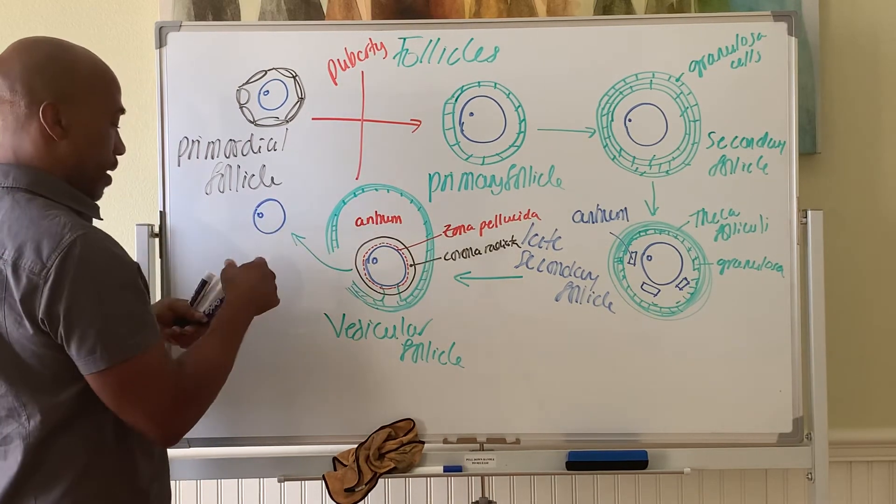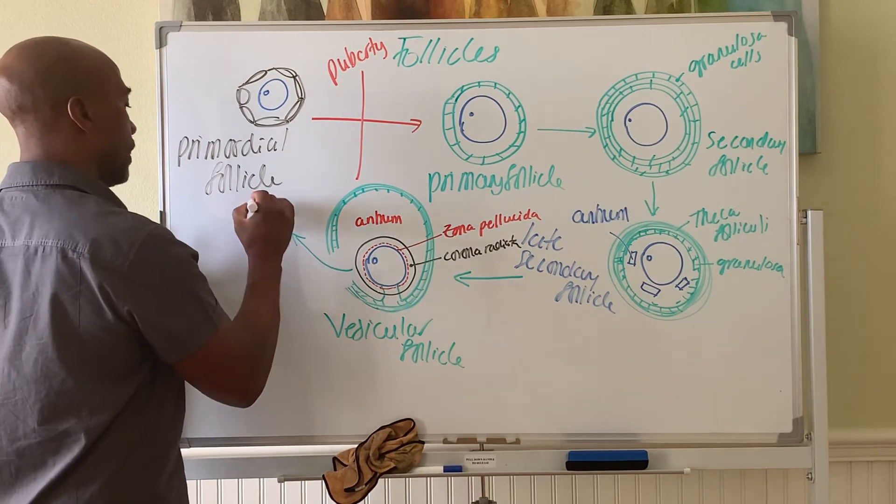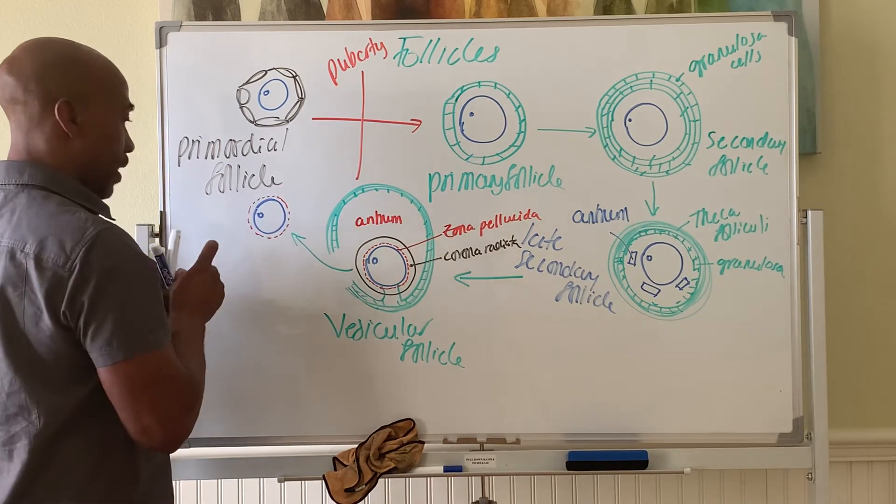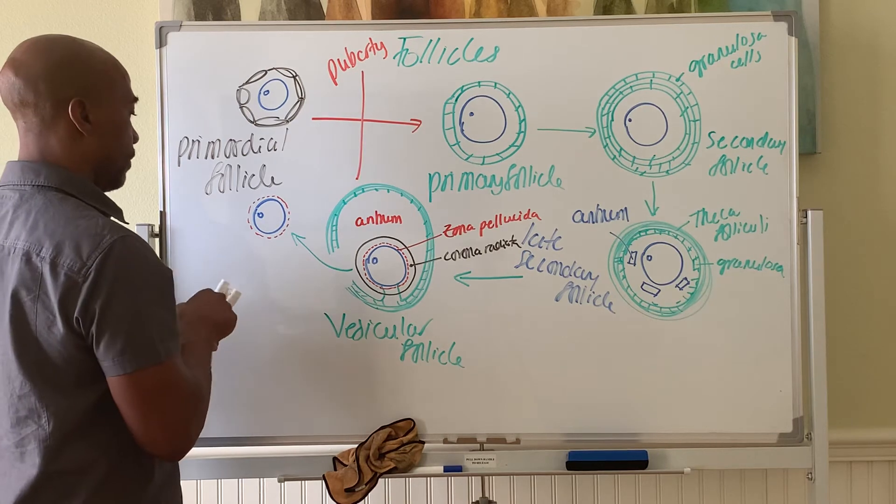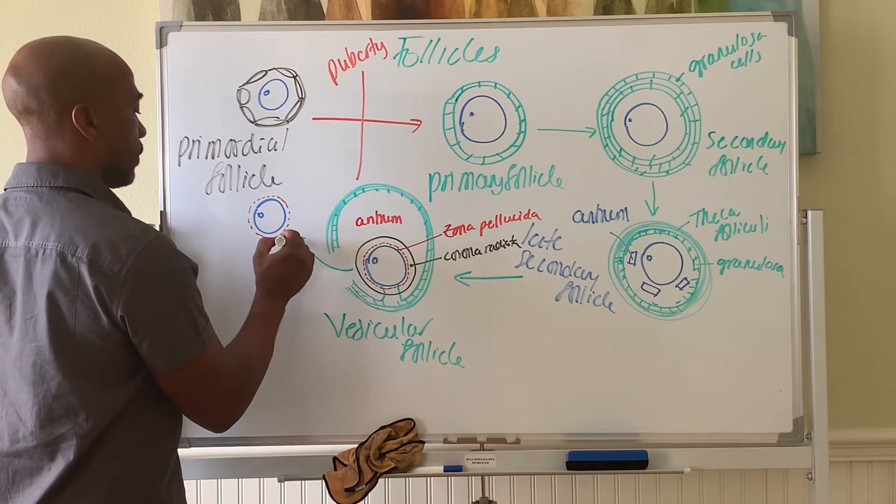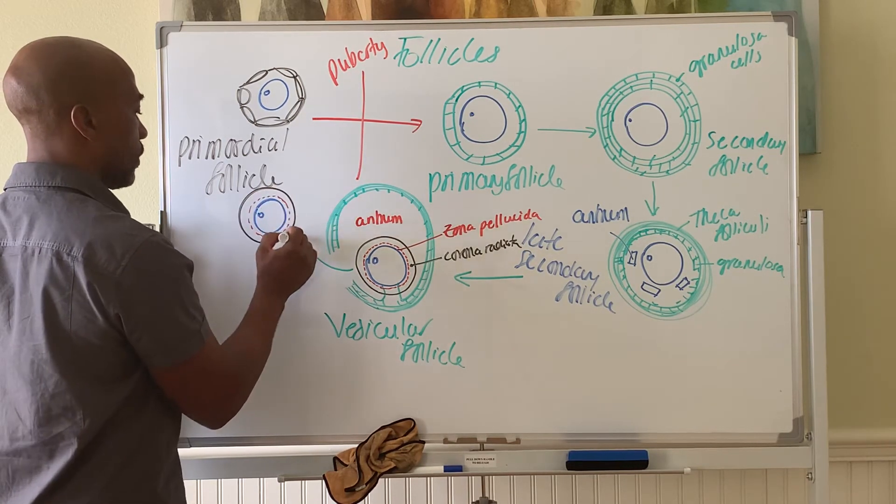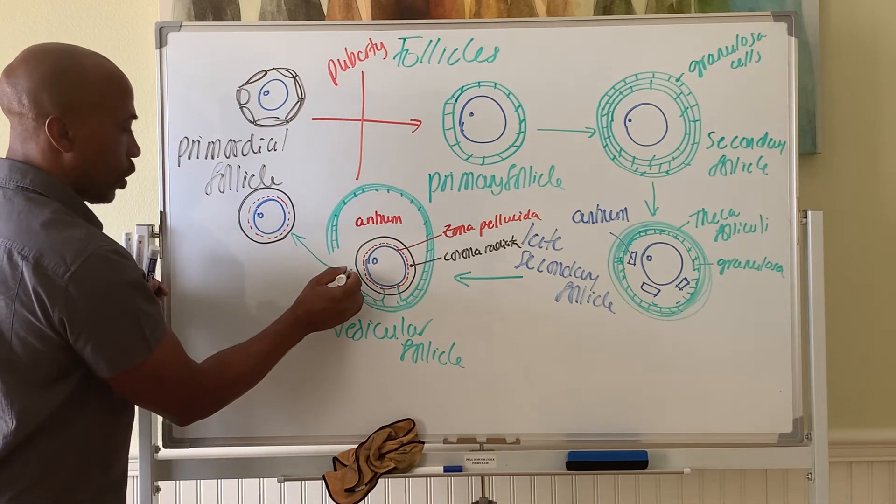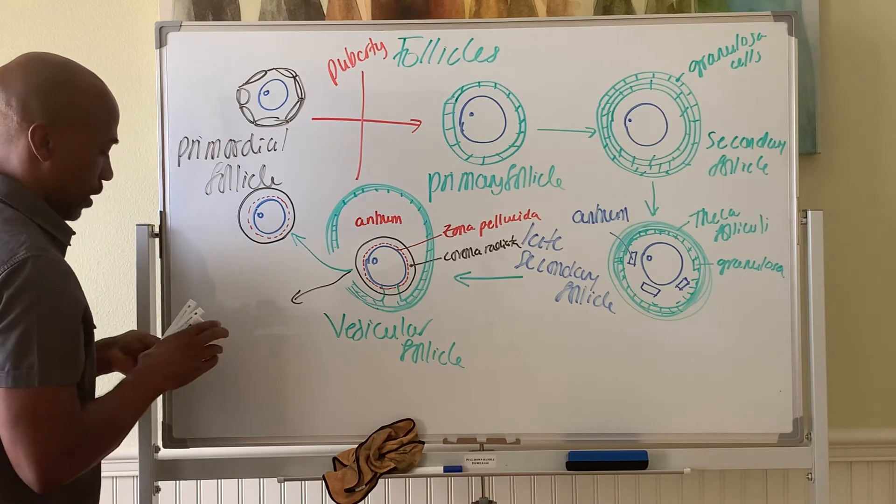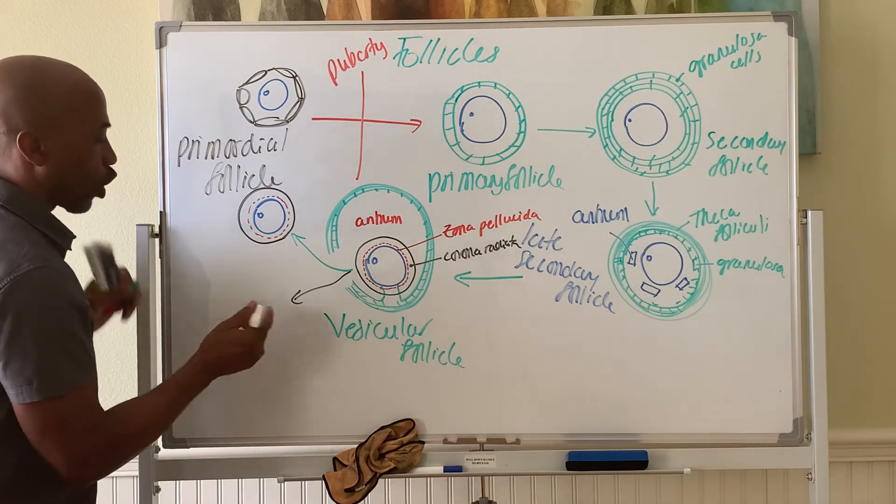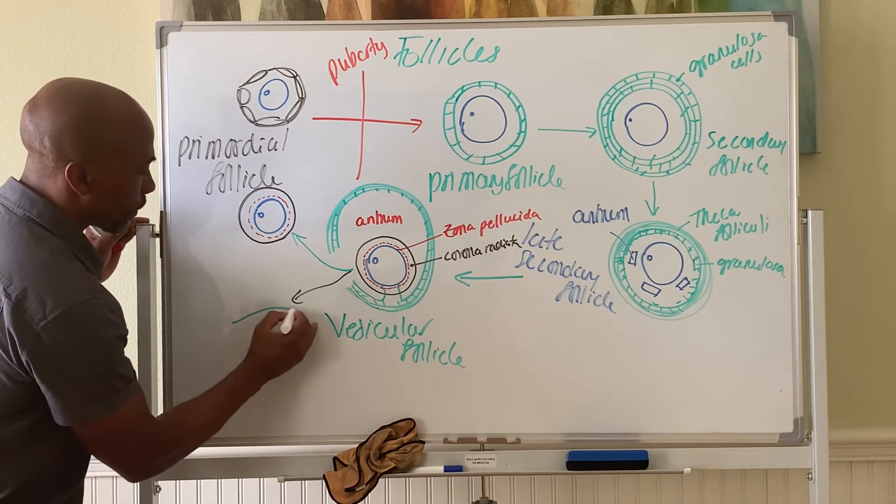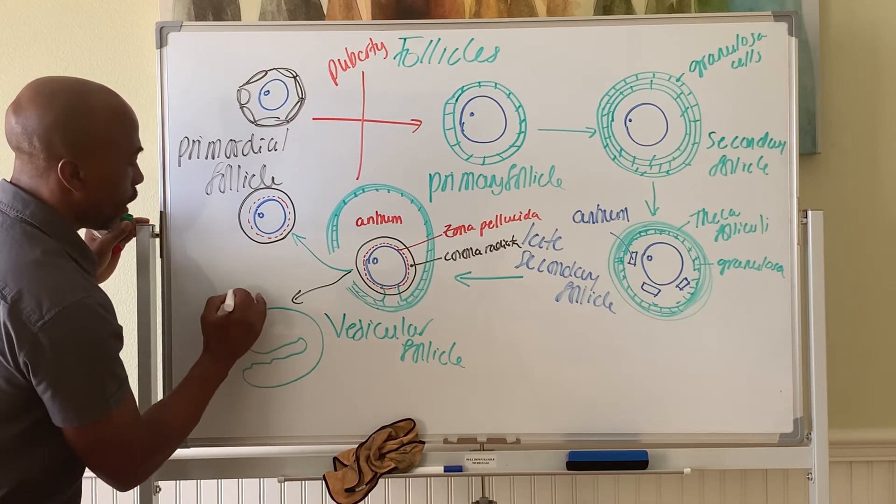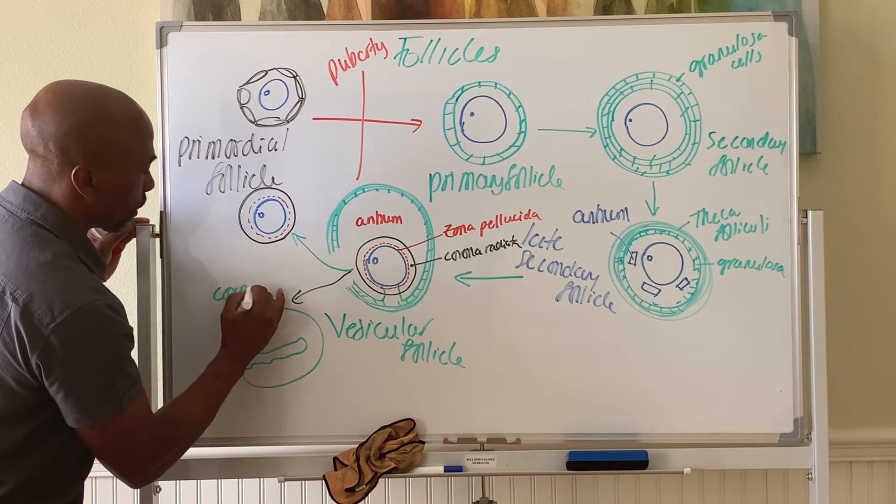Rupture to release the oocyte surrounded by the zona pellucida, surrounded by the corona radiata. That's ovulation. And then this follicle will collapse to form a follicle called the corpus luteum. So this follicle collapses to form your corpus luteum.